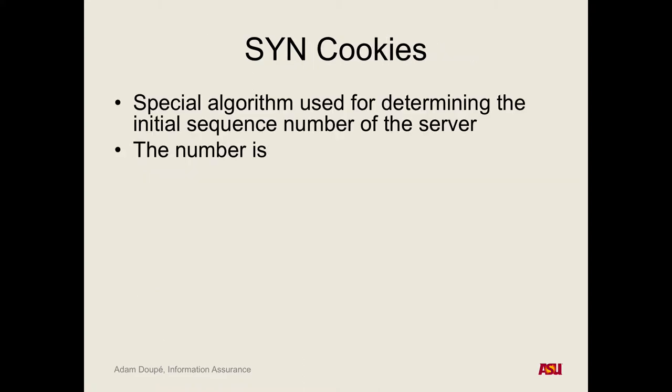The core problem is that one single SYN packet causes the server to store data, without requiring any data to be stored on the client. What if we don't store that data — what if we encode it into the sequence number we send back? Then if we see an ACK packet with the right acknowledgement number, we can verify it's correct. The mitigations include filtering, reducing timeouts, increasing the queue limit, and SYN cookies. SYN cookies work by using an algorithm to inject the connection state into the sequence number of the SYN-ACK, so the server never stores any state until the ACK arrives.